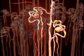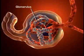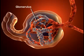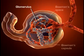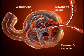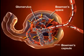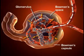The glomerulus is a unique high-pressure mass of capillaries that filters the blood. The glomerulus is encased in a thin, double-walled capsule called Bowman's capsule. The space inside the capsule and surrounding the glomerulus is called Bowman's space.